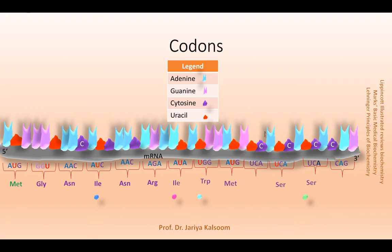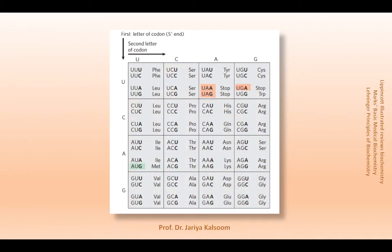64 different combinations of triplet code exist. This table shows various codons, always written in the 5' to 3' direction. The third base of each codon, shown in bold type, plays a lesser role in specifying an amino acid compared to the first two bases. The three termination codons are shaded in light orange, and the initiation codon is shaded in light green. All amino acids except methionine and tryptophan have more than one codon.